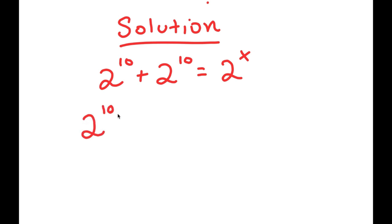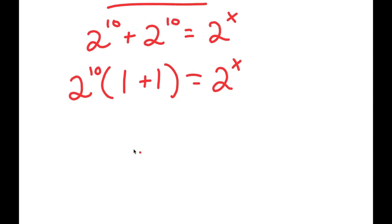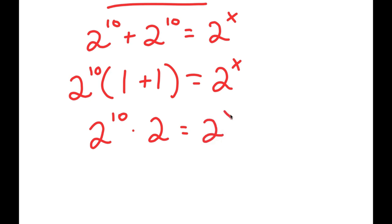So if I factor out 2 to the power of 10, I get 2 to the power of 10 times — well, 2 to the power of 10 divided by 2 to the power of 10 is 1. So I get 2 to the power of 10 times 1 plus 1 is equal to 2 to the power of x. Now from here, 1 plus 1 is equal to 2, so I get 2 to the power of 10 times 2 is equal to 2 to the power of x.